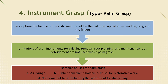Palm grasp type: the handle of the instrument is held in the palm by curled index, middle, ring, and little fingers. Limitation of use: instruments for calculus removal, root planing, and maintenance root debridement are not used with a palm grasp. The possible exception is a chisel scaler when it is used to remove gross calculus by a push stroke. Examples of use for palm grasp: air syringe, rubber dam clamp holder, and chisel for restorative work. The last example is a non-dominant hand stabilizing the instrument for sharpening.